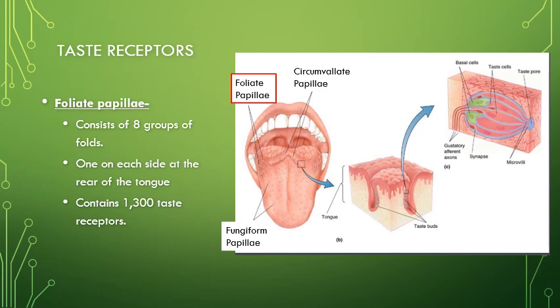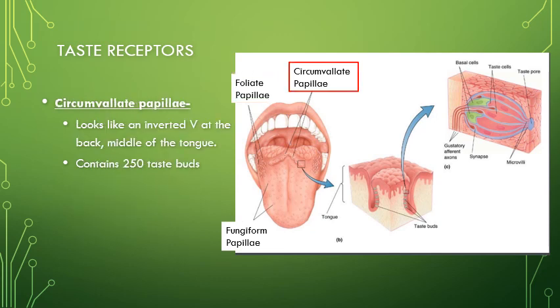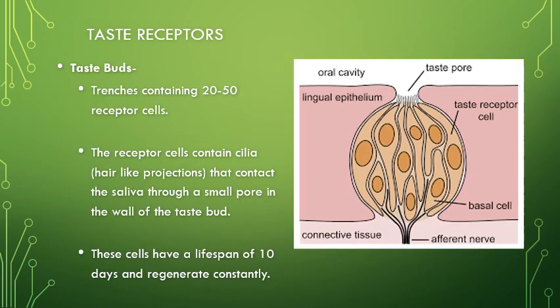A little further back are the foliate papillae on the sides of the tongue, arranged into about eight rows. These represent roughly 1,300 of the 10,000 taste buds and line both sides of the tongue. Then the circumvallate papillae form a V-shape on the back of the tongue, with only about 250 of them. Each taste bud trench contains 20 to 50 receptor cells, with hair-like cilia that make contact with saliva through a taste pore.